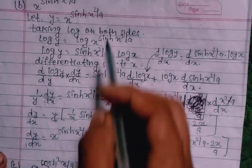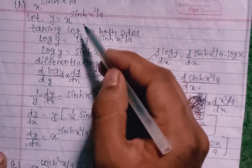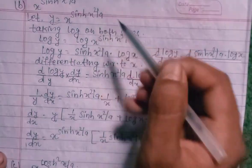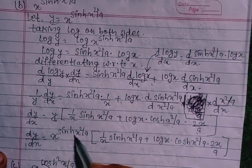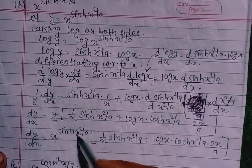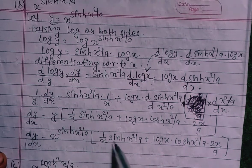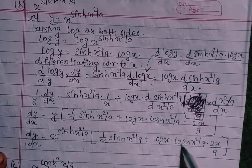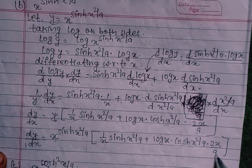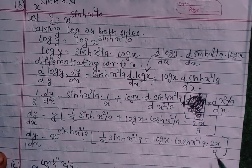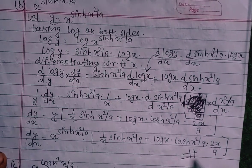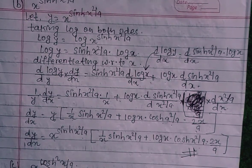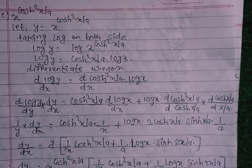We will find the value of y. So y equals x^(sin(x²/a)). Therefore dy/dx equals x^(sin(x²/a)) times [1/x sin(x²/a) plus log x cos(x²/a) times 2x/a]. And we move to the next question, the 5th number.